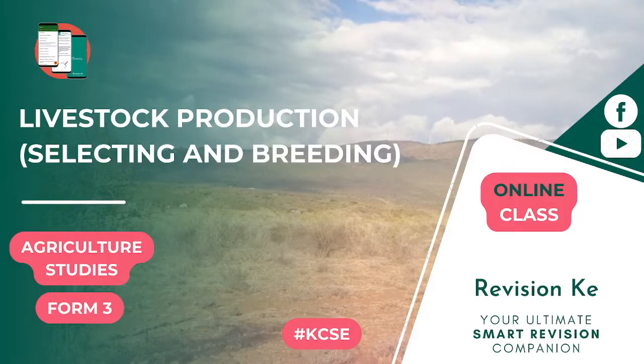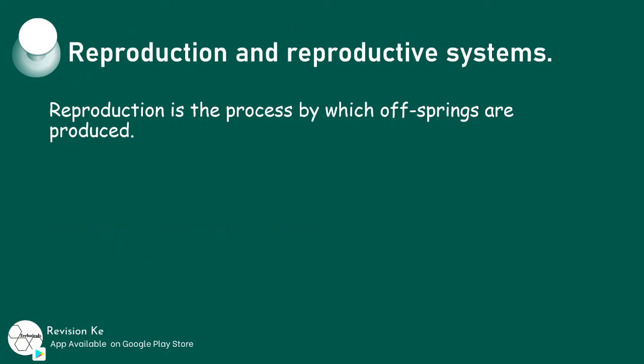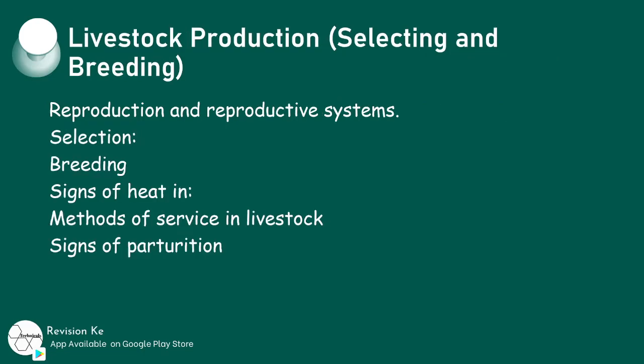In livestock production, we will be looking at selecting and breeding. Let's first define what reproduction is. Reproduction is a process by which offspring are produced.